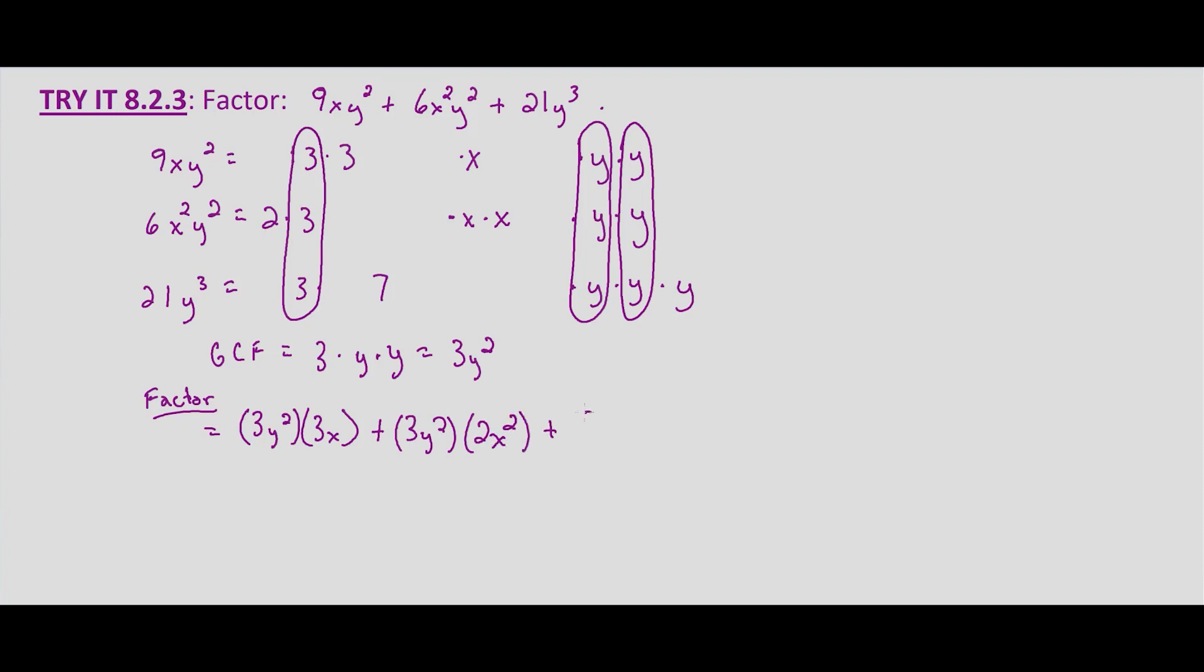Plus again 3y², times what's left in this last row, 7 times y.